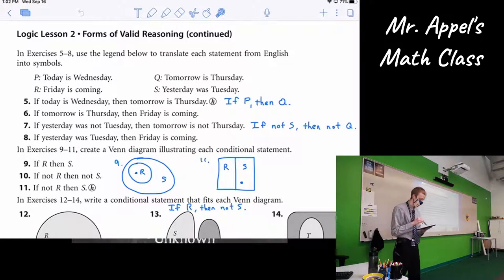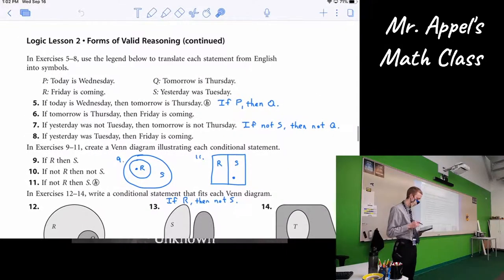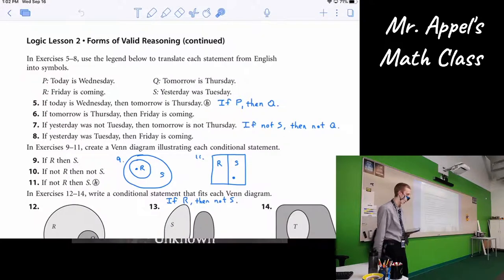All right. Next section. Number five. If today is Wednesday, then tomorrow is Thursday. Thanks to the key provided here, we can shorten that into our symbolic form and just say if P then Q. Short and sweet. And then number seven turns into if not S, then not Q. Okay, because they both had the knots in them as stated, but the knot wasn't in the translation statements. So you still have to write that part out.